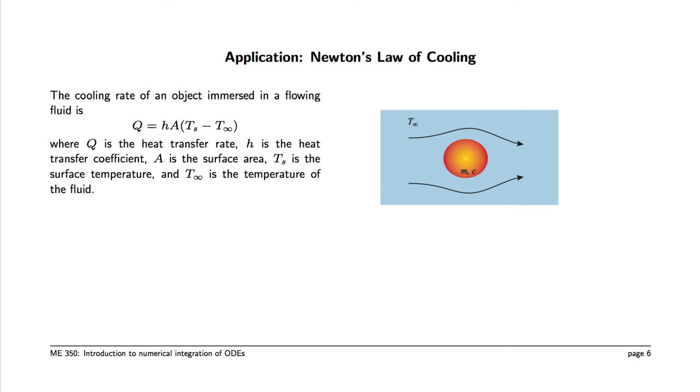We could be boiling an egg. The cooling or heating rate is determined by the temperature difference between the surface of the object and the fluid. There's a proportionality constant h, the heat transfer coefficient, and the surface area a. So the total heat transfer rate is determined by this equation, which is also called Newton's law of cooling.